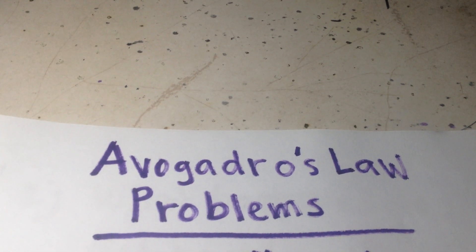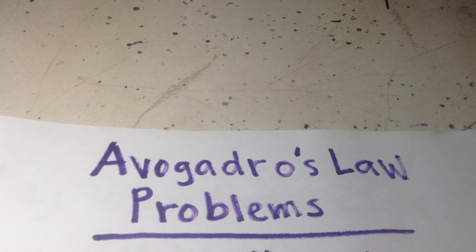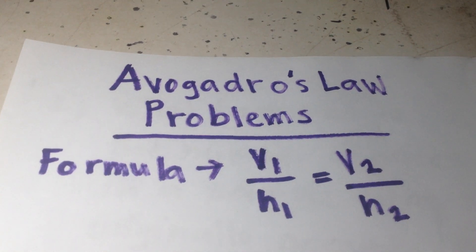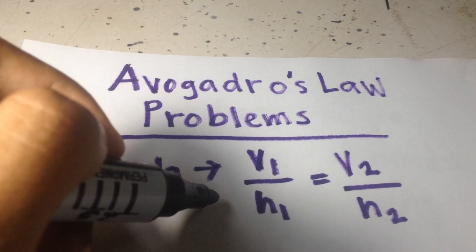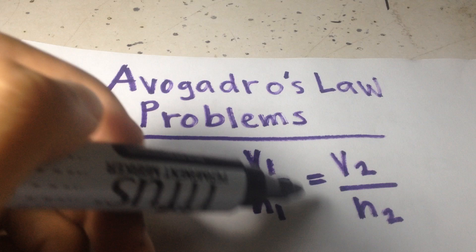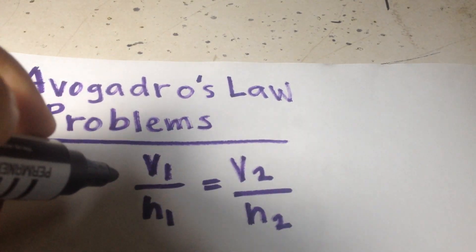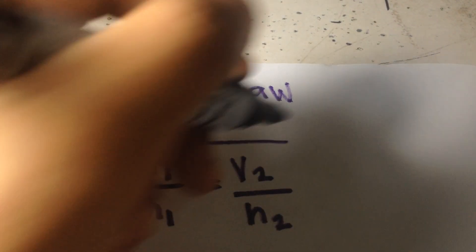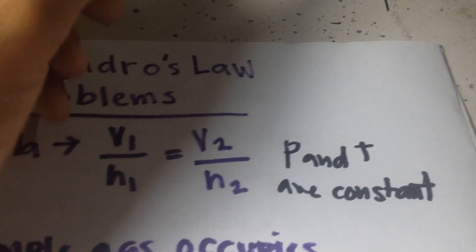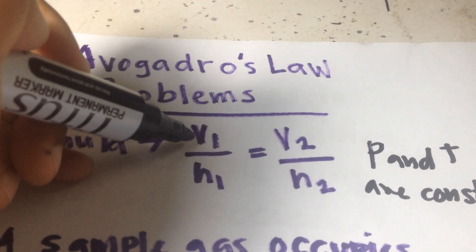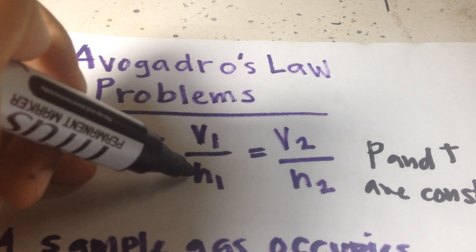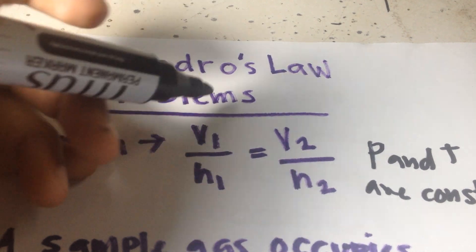Hello everyone. In this video, we're going to solve Avogadro's Law problems. This is the formula: V1 over N1 equals V2 over N2, where pressure and temperature are constant. V represents the volume of the gas, and N represents the number of moles of gas.